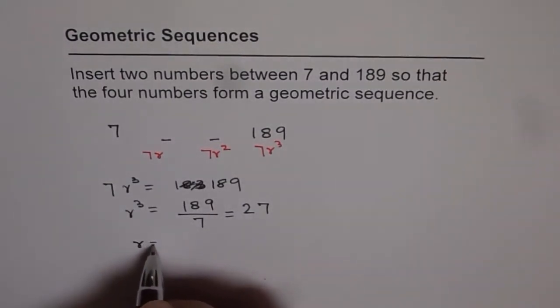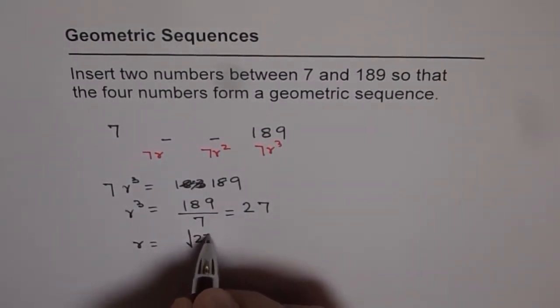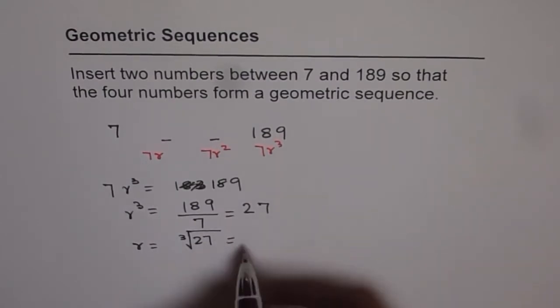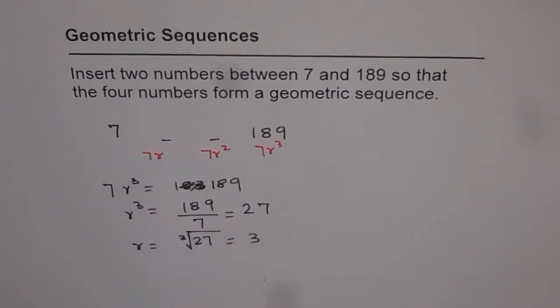So from here, r is cube root of 27. Cube root of 27 is 3. 3 times 3 is 9. 9 times 3 is 27. So we get r as equal to 3.